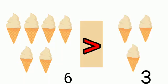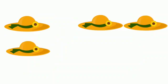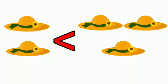Six ice creams on the left side and three ice creams on the right side. Six is greater than three. See the hats here. On the left side there are two hats, and on the right side there are three hats. So two is less than three.